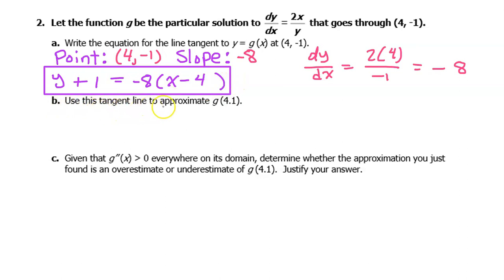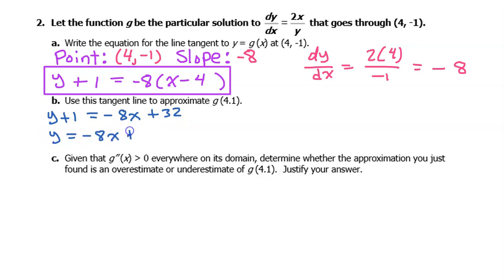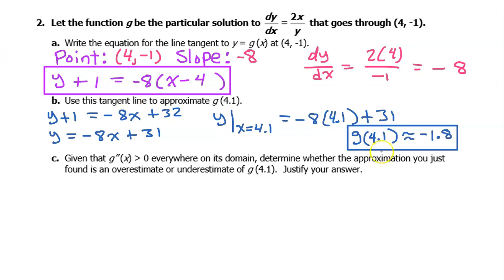For part B, use the tangent line to approximate g at 4.1. Getting y by itself: y plus 1 equals negative 8 times (x minus 4), distributing gives negative 8x plus 32. Subtracting 1 from both sides gives y equals negative 8x plus 31. To approximate g at 4.1, we evaluate y at x equals 4.1: negative 8 times 4.1 plus 31, so g at 4.1 is approximately negative 1.8.